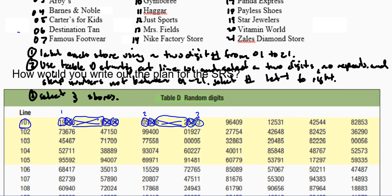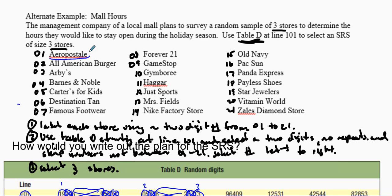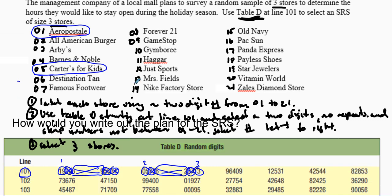Nineteen, five, and thirteen are them. So we go up here, we have one, we also had five, Carter's for Kids, and we also had thirteen. Thirteen is Mrs. Fields, and those are the three stores that we selected.